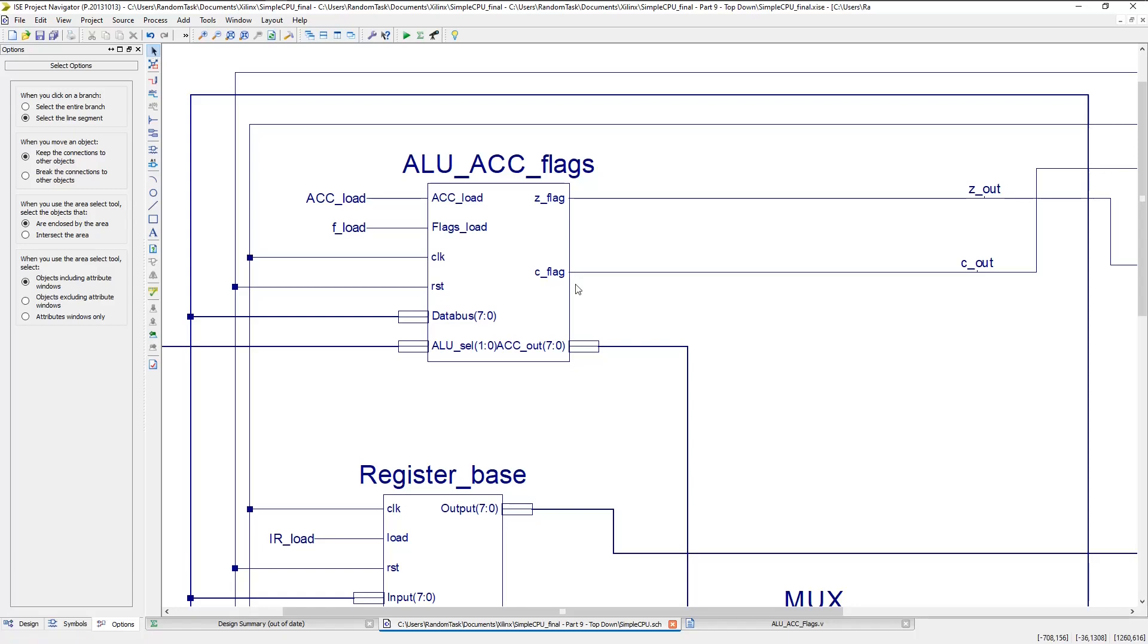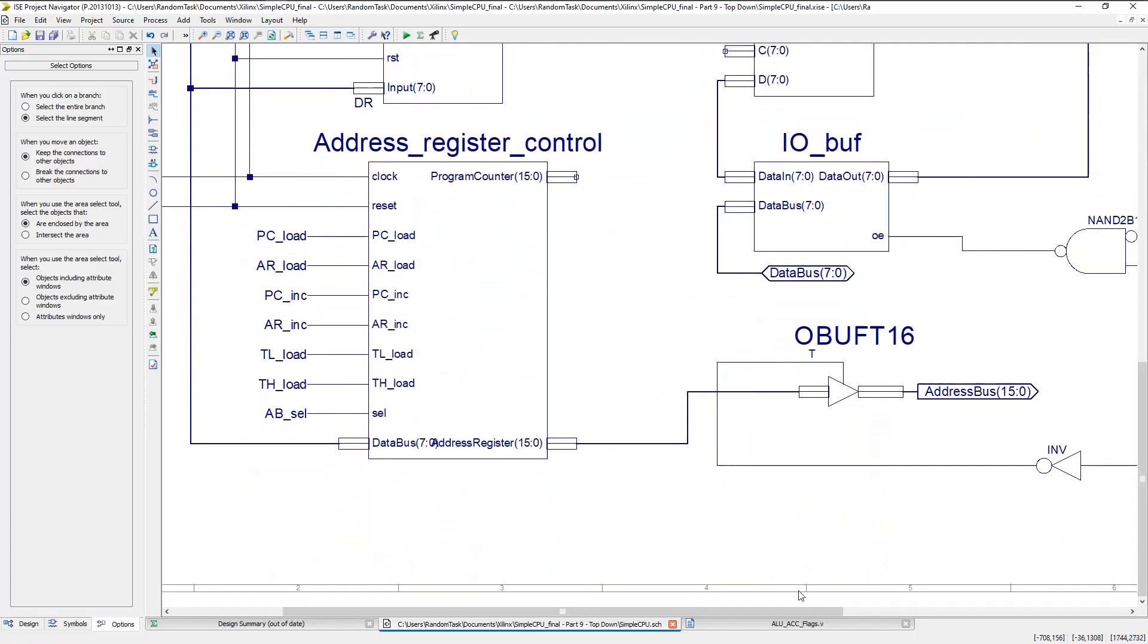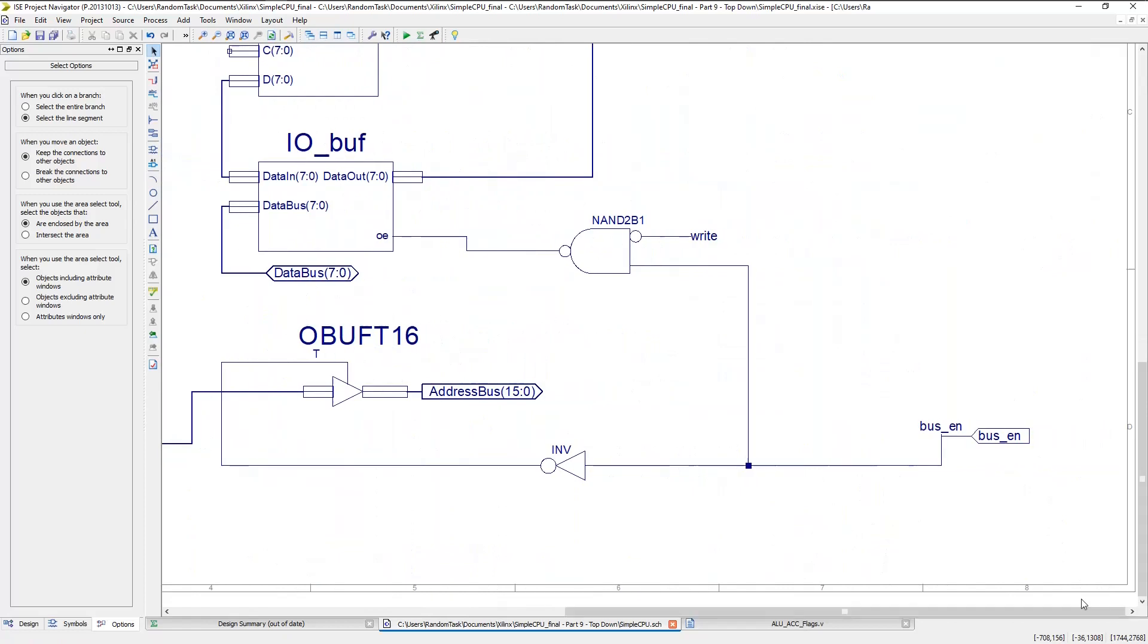Next, I'm going to remove the bus enable line, since it's no longer needed, and replace it with a bus access output line. This would just be ANDing the read and write lines together, so that if either goes low, the bus access line will go low, indicating if the CPU is accessing the bus.